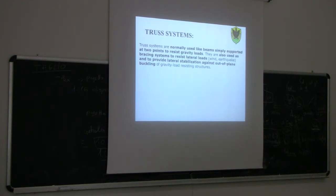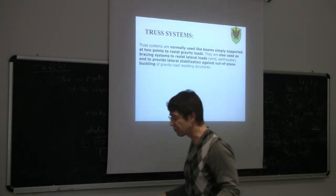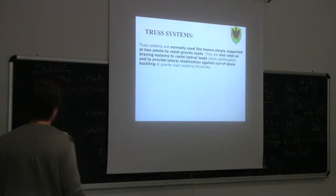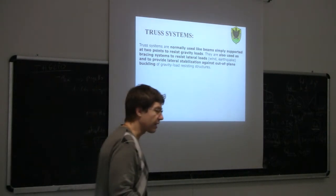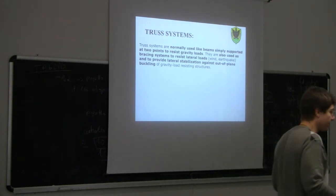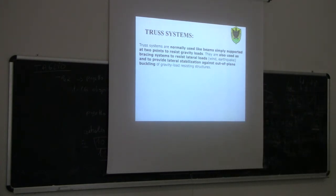Truss systems are usually considered as simply supported external systems used to resist gravity vertical loads. Of course, they can also be used as a bracing system — for example, a diagonal bracing system to take lateral loads — and also to provide some lateral stabilization against out-of-plane buckling.